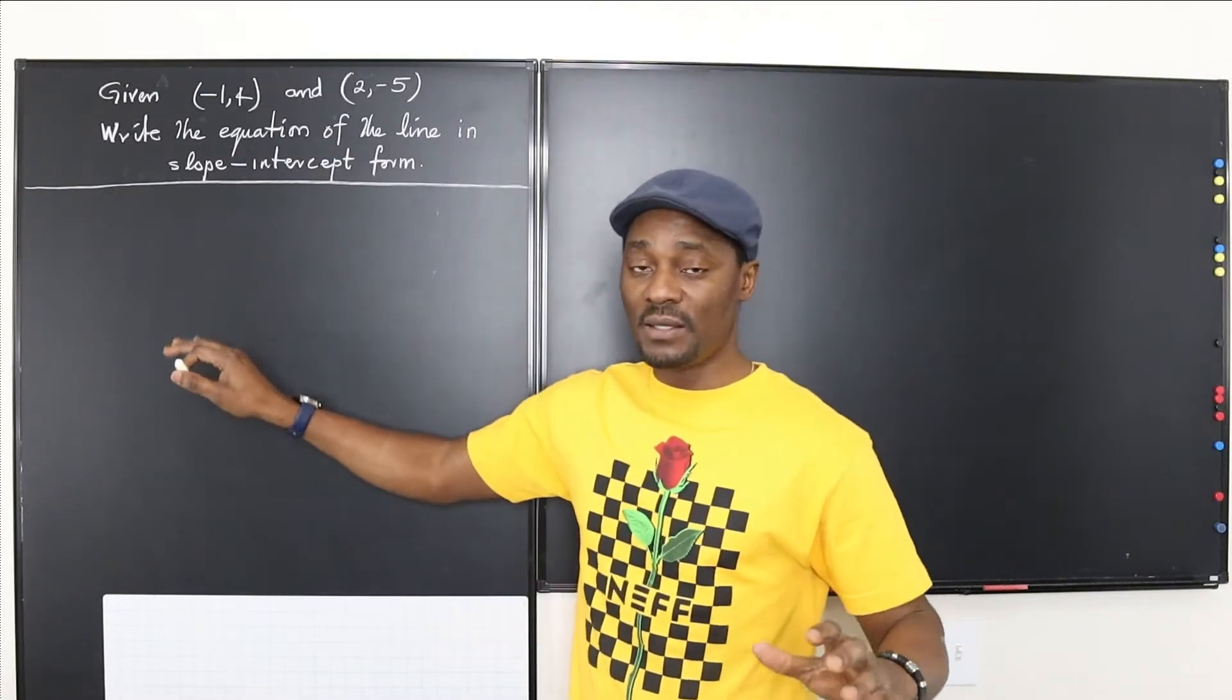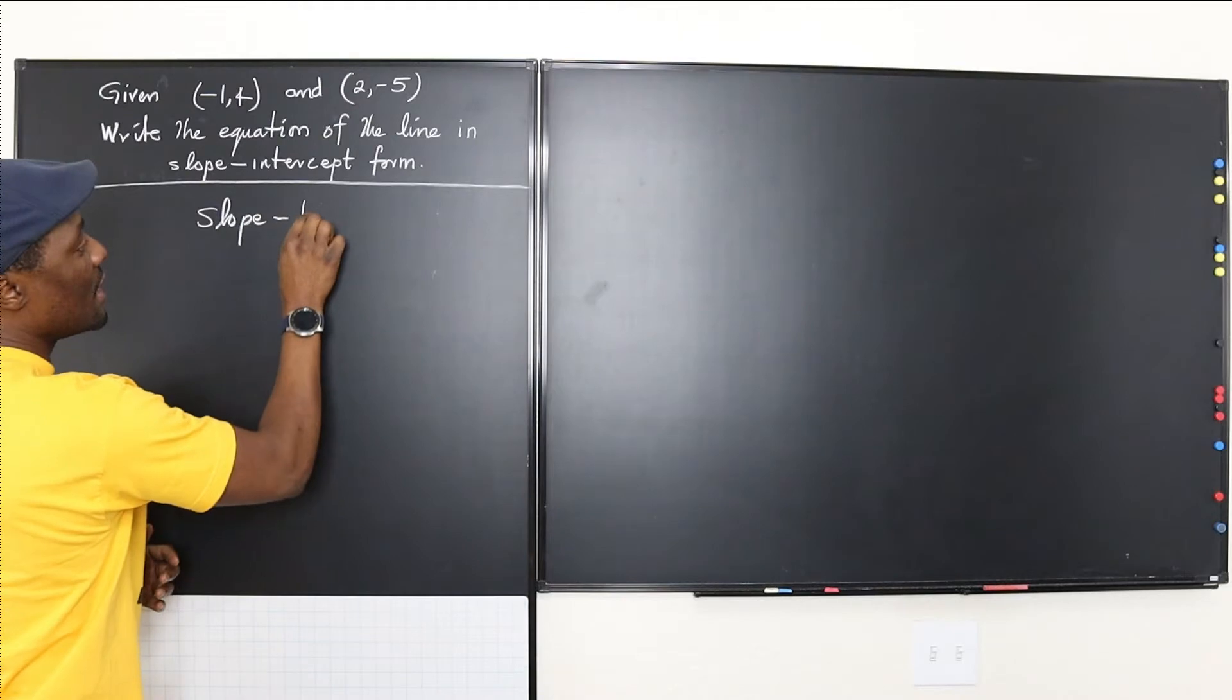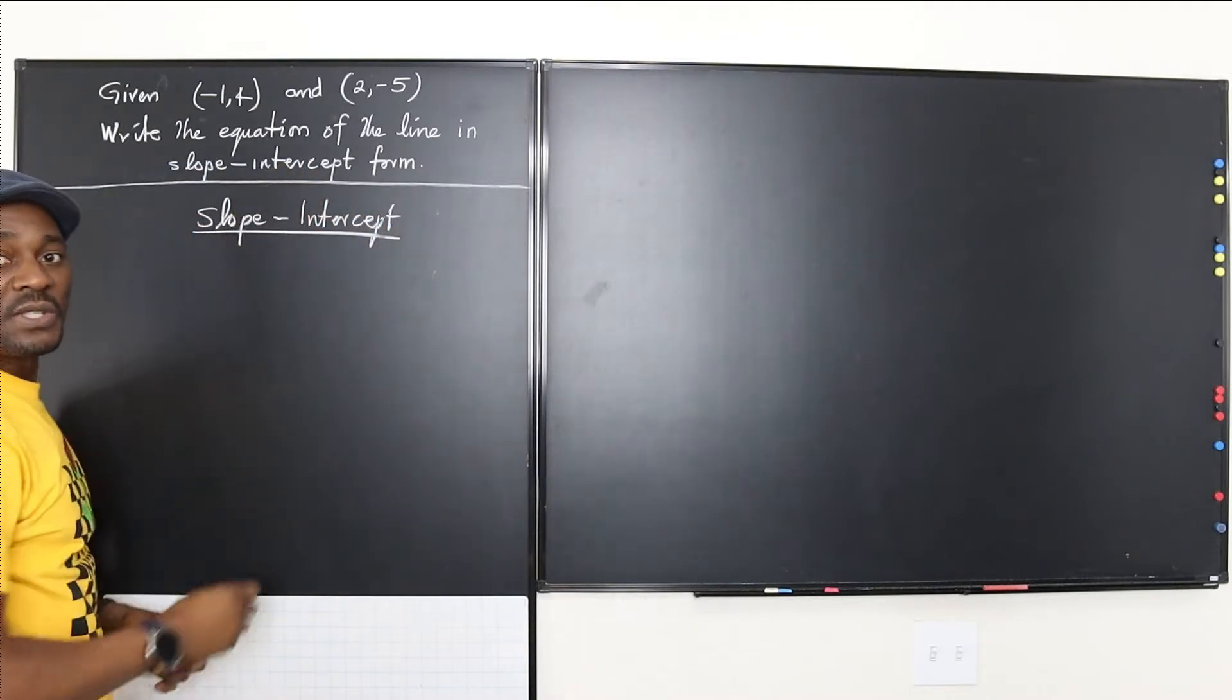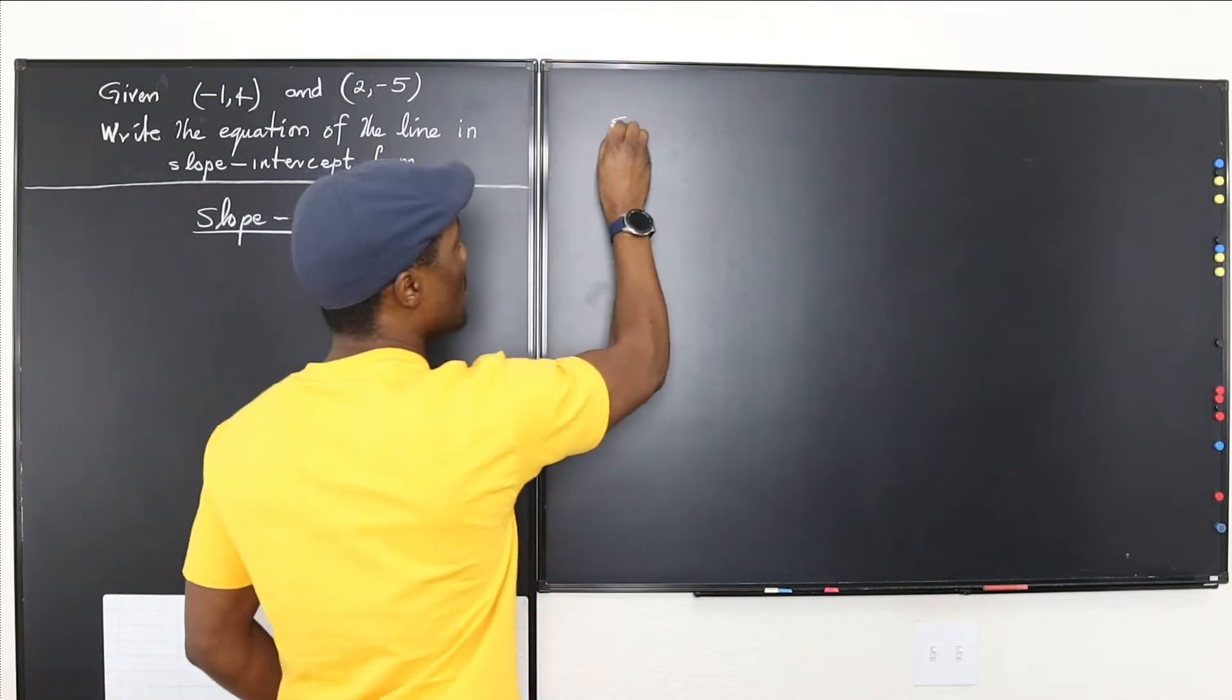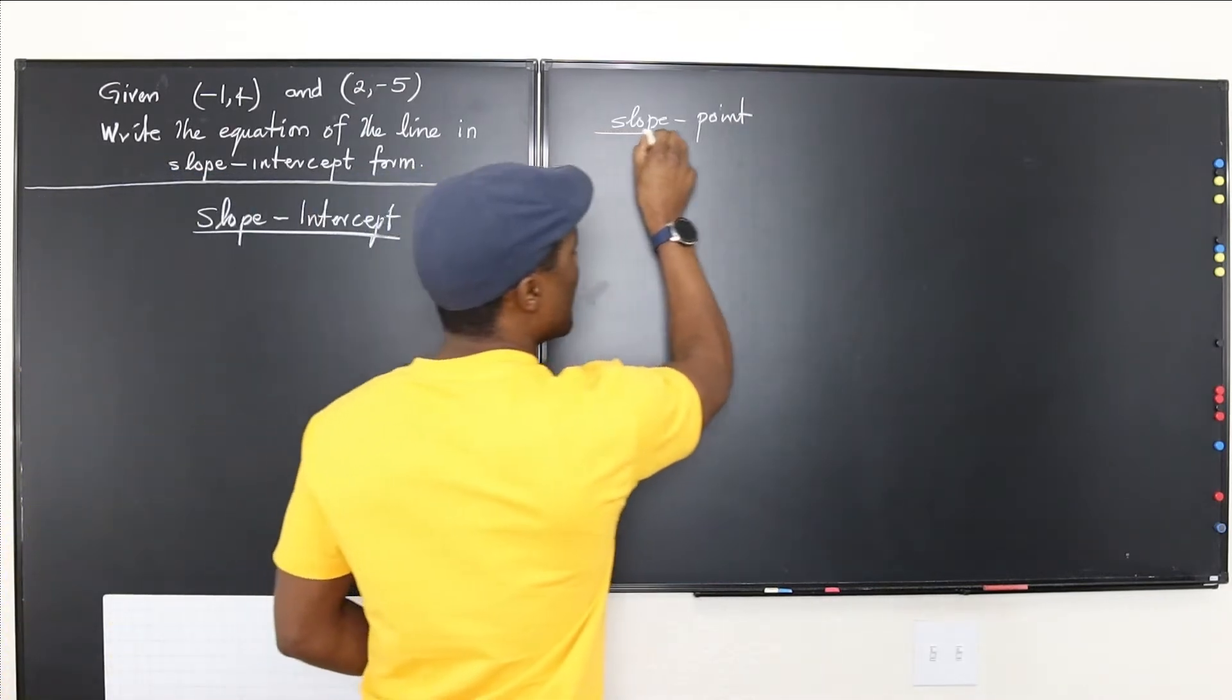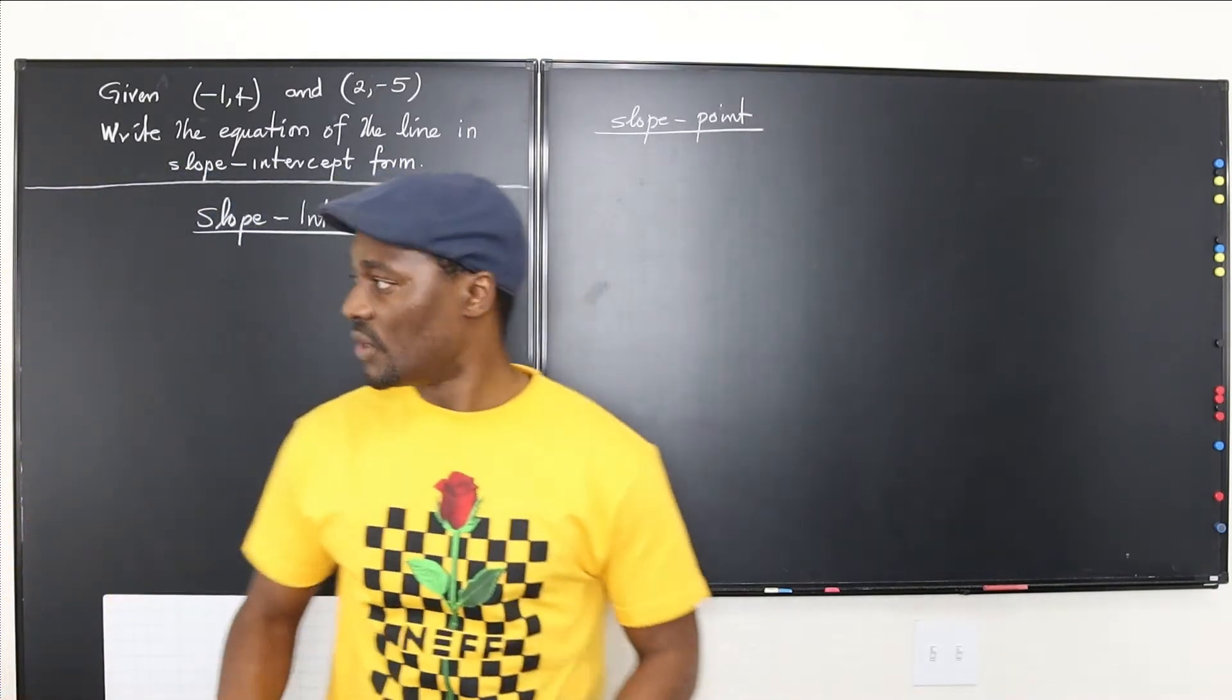We're going to start with one of the two methods. I'm going to write the two options we have on the board. The first one is called the slope-intercept form, which is the form we're supposed to leave our answer. Another option you have is called the slope-point form. We're going to do this first, and then we'll go back and I'll tell you the difference between these two.